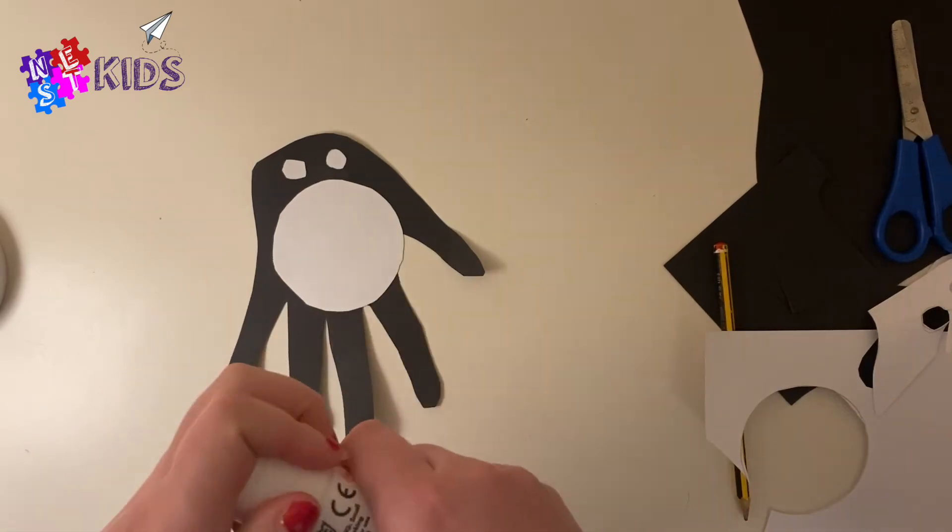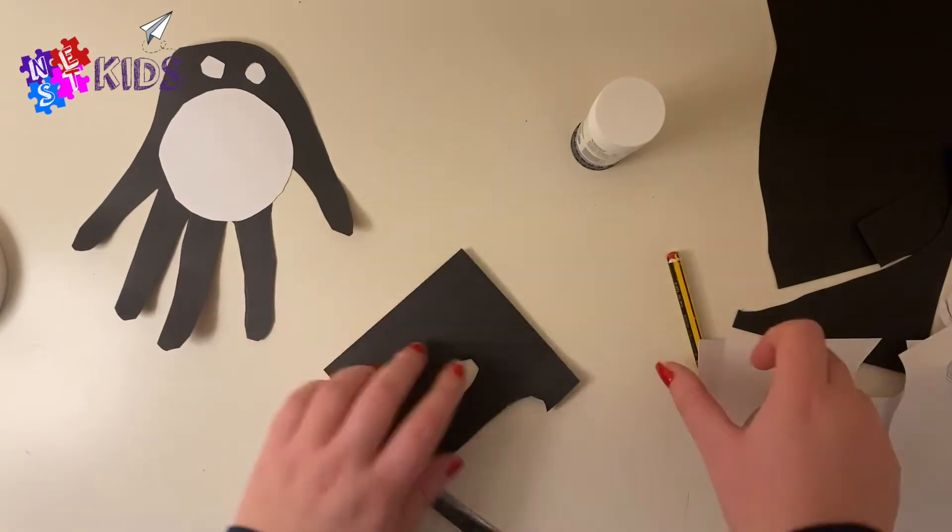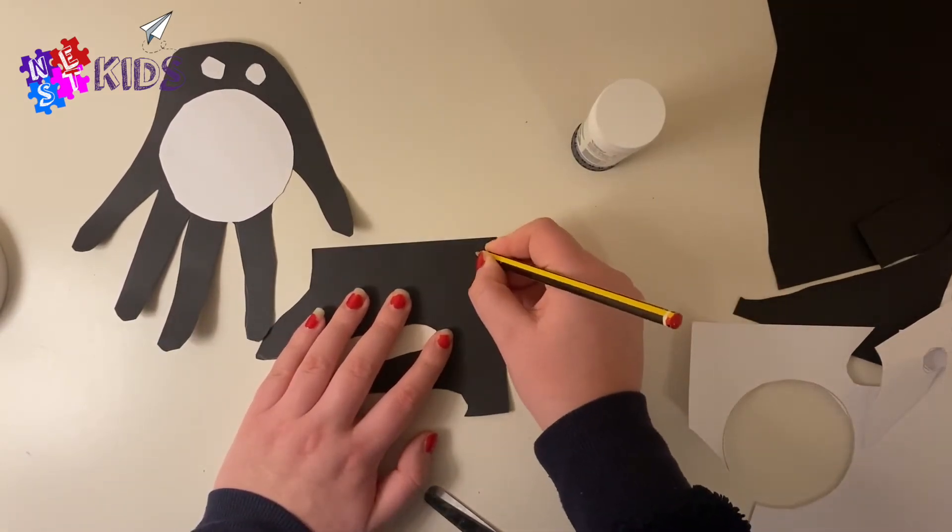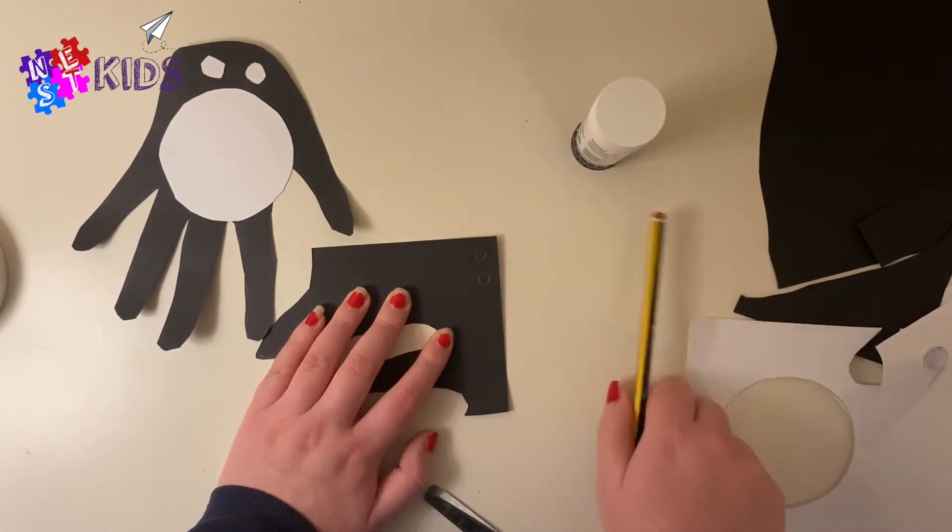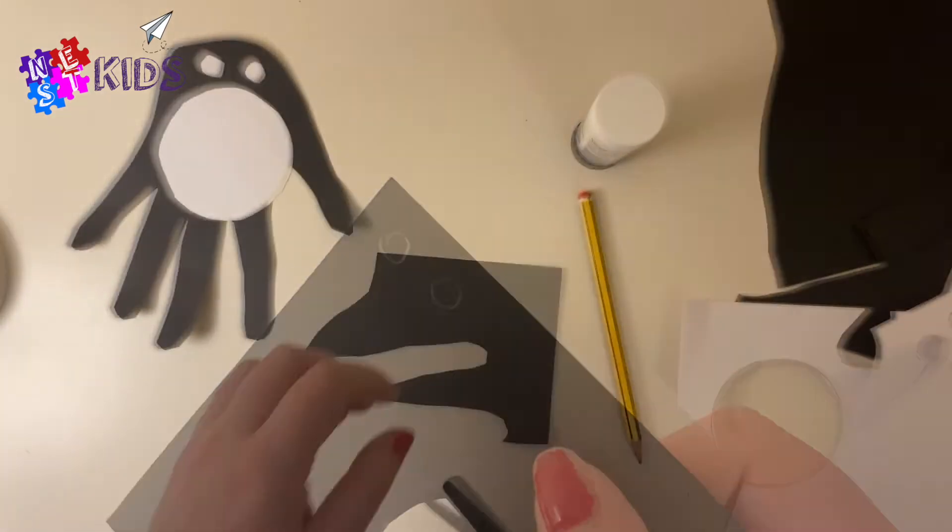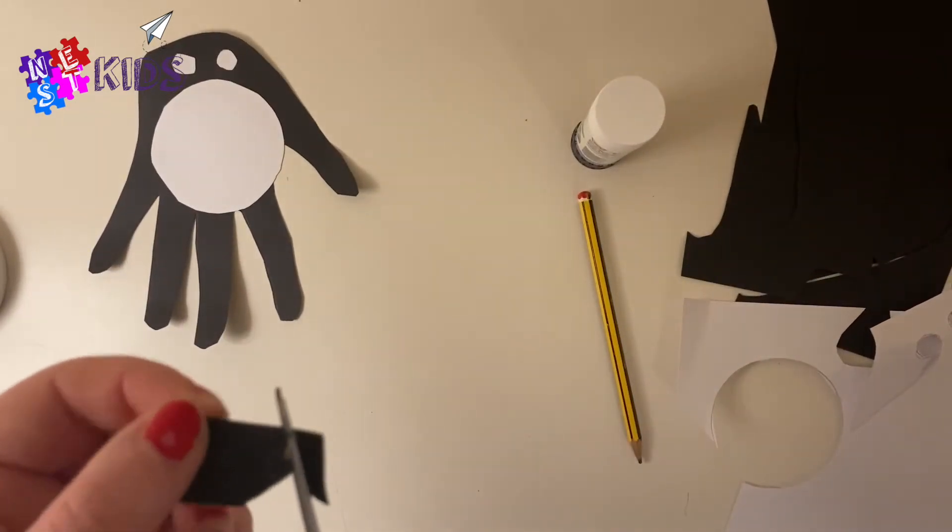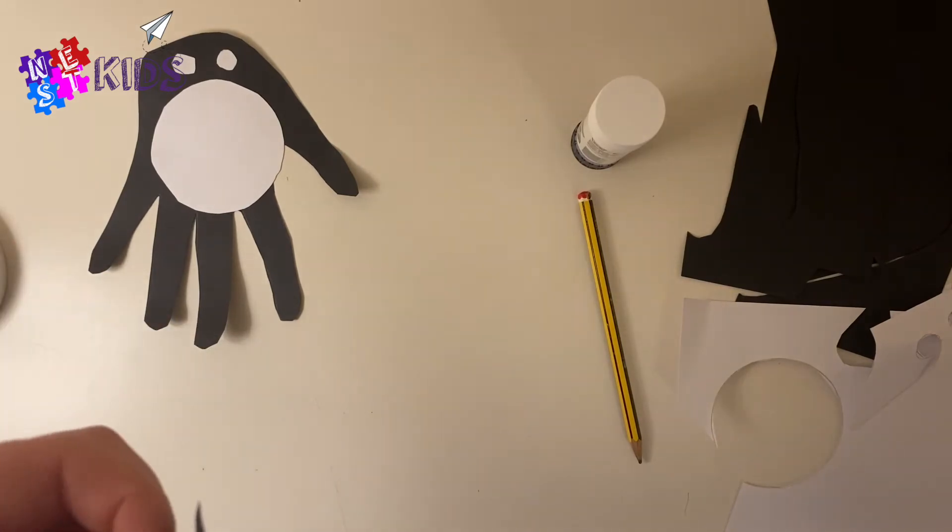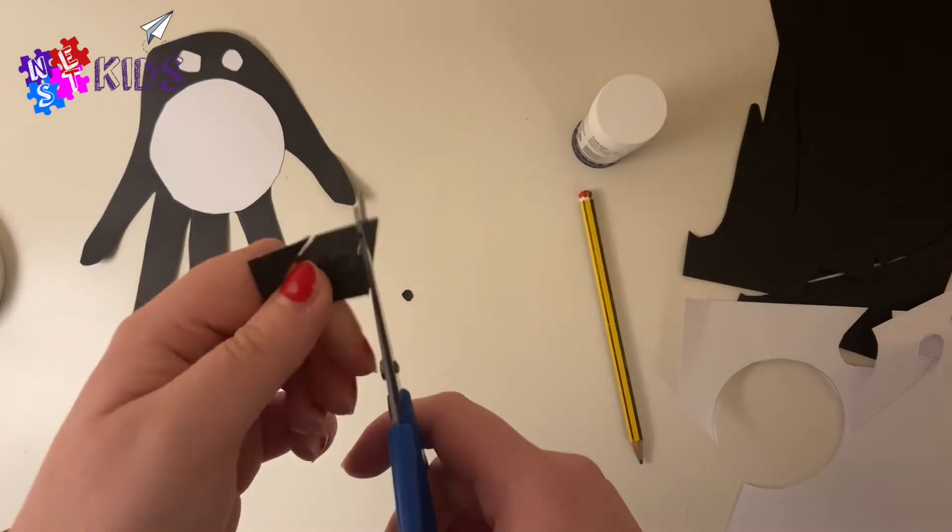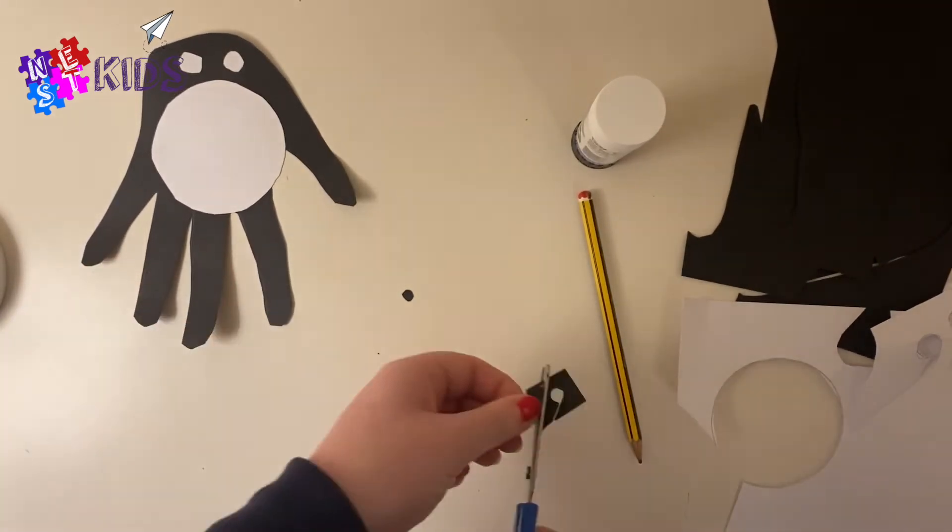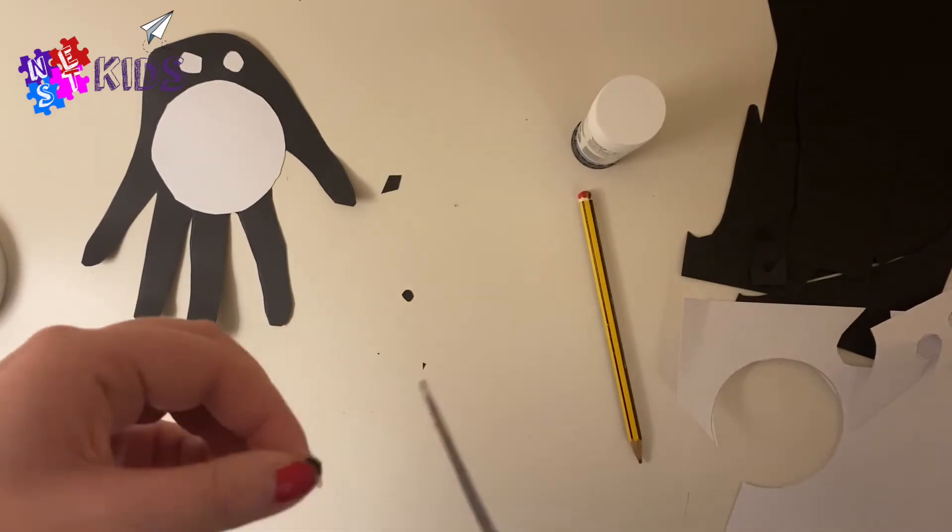The eyes look a bit scary at the minute, so what we're gonna do next is put some black pupils in the eyes. You need another black bit of card and tiny black dots that you're going to cut out. We're going to use these as the pupils of our penguin's eyes.